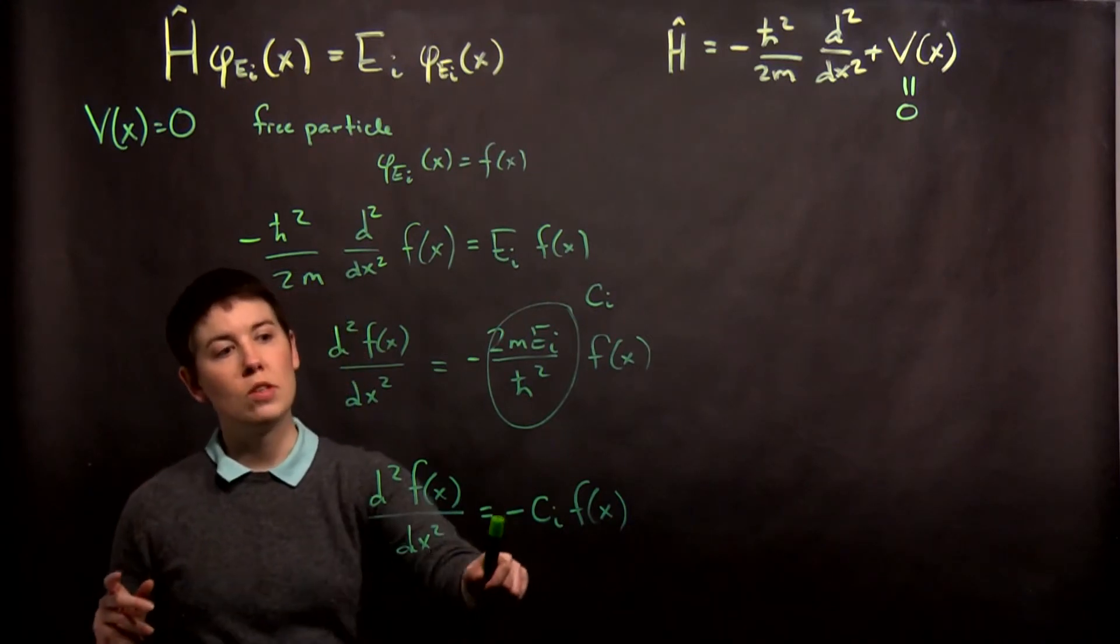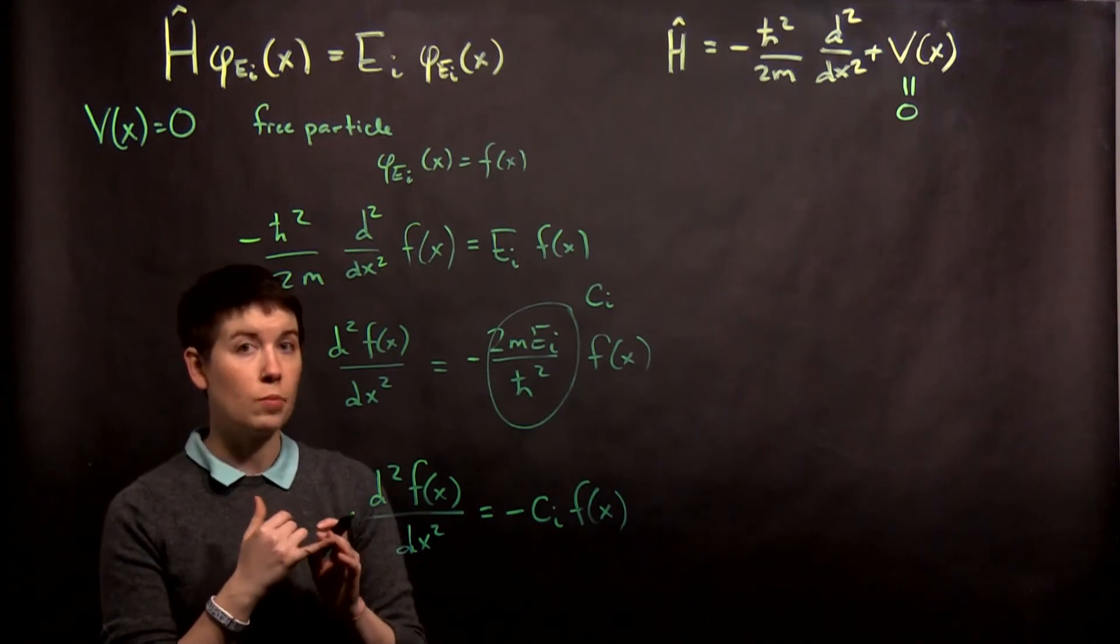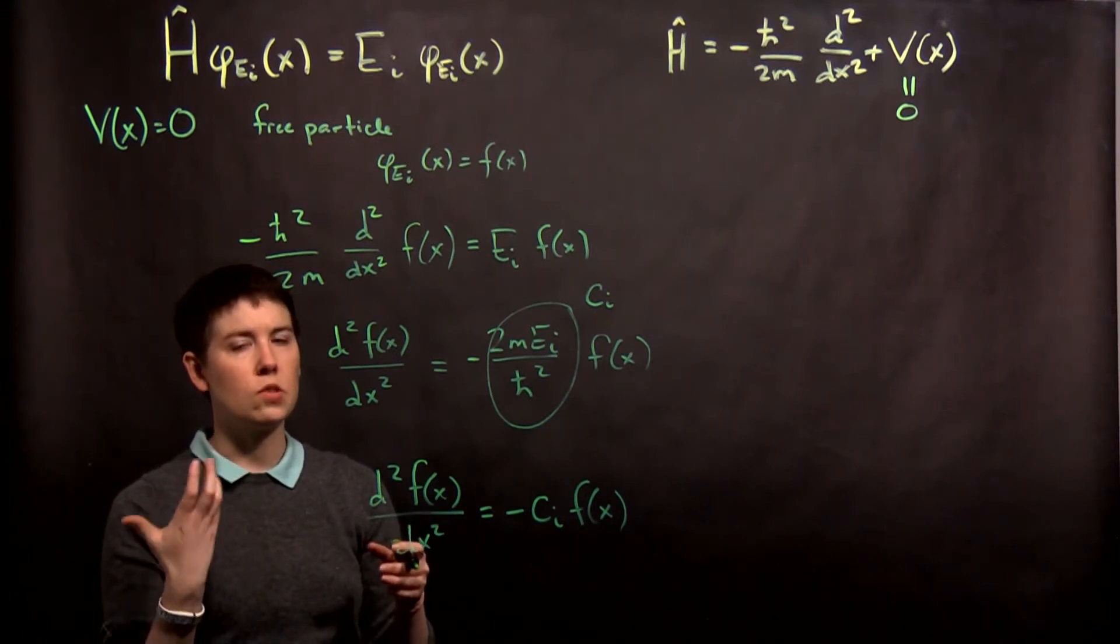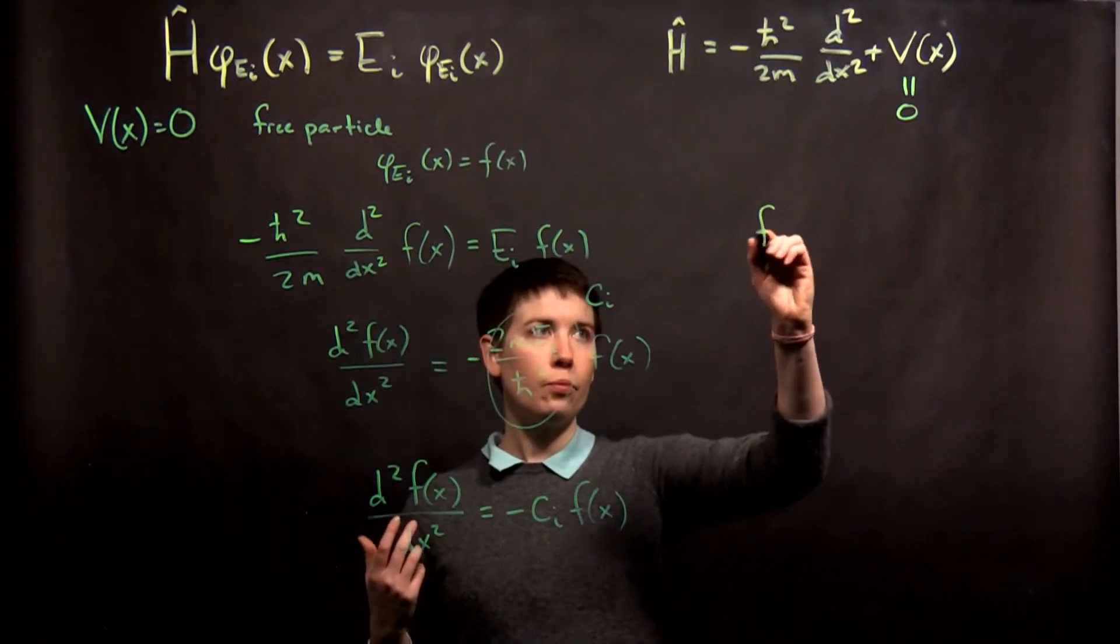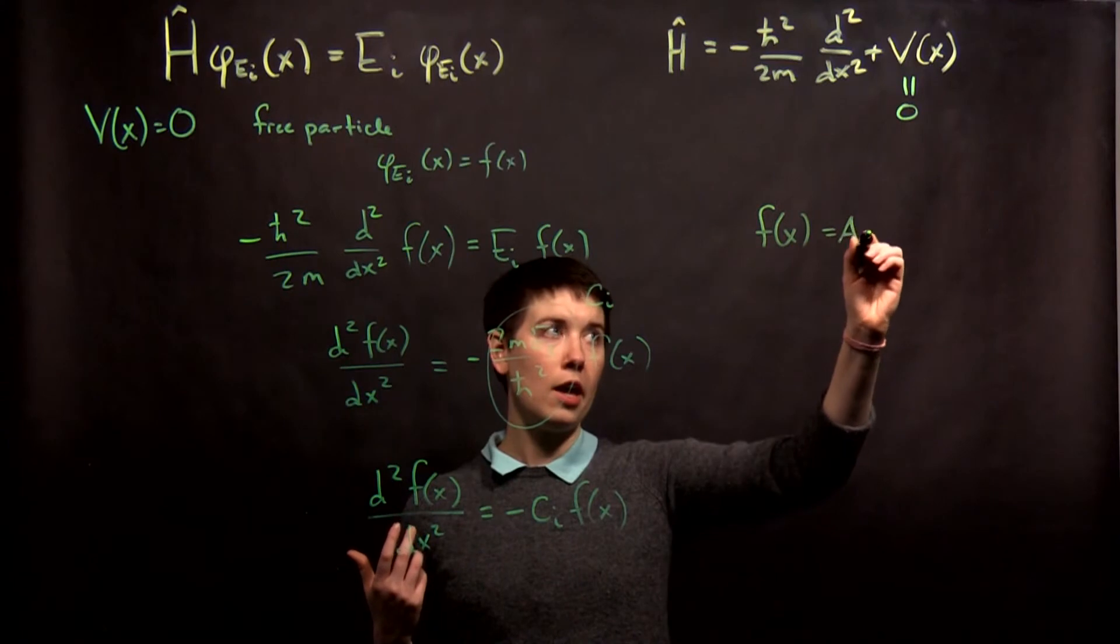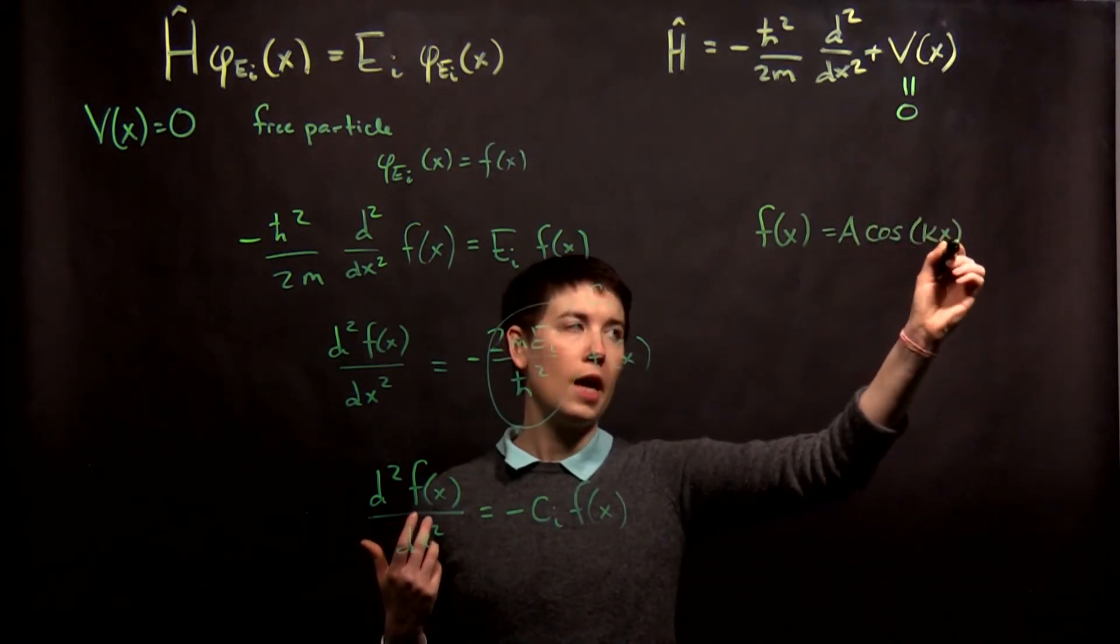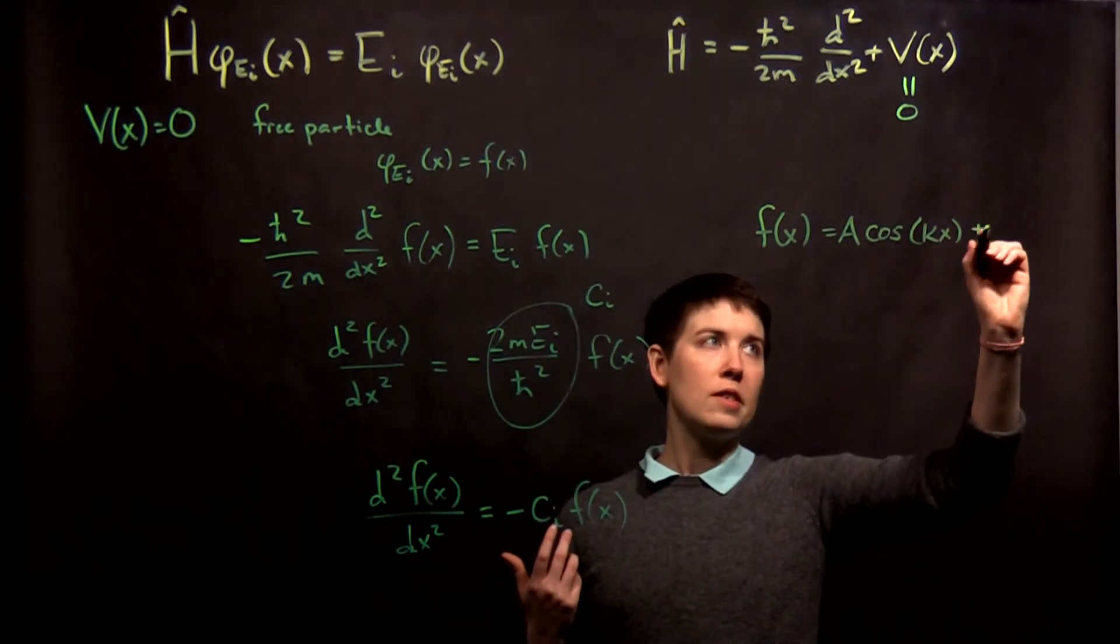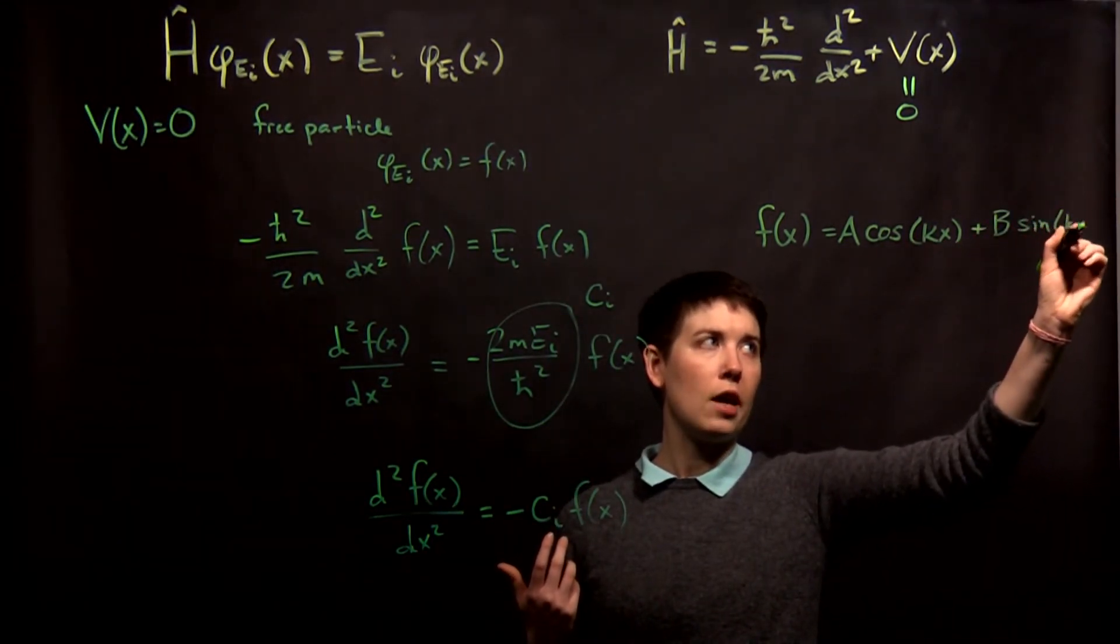Well there's two ways to think about this and it really comes from this minus sign. You either need a complex exponential or you can write this as sine and cosine. So let's first do it this way. Let's say that f(x) equals A cosine and I'm going to keep this a general kx plus B sine of kx.